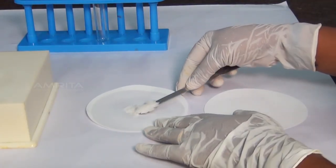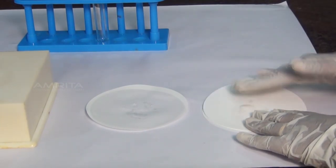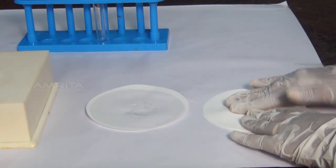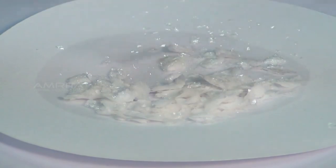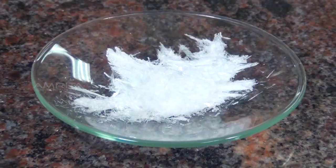Transfer the crystals to another filter paper and dry them by pressing gently between the folds of the filter paper. Transfer the crystals into a dry test tube. The crystals of benzoic acid are opaque white.